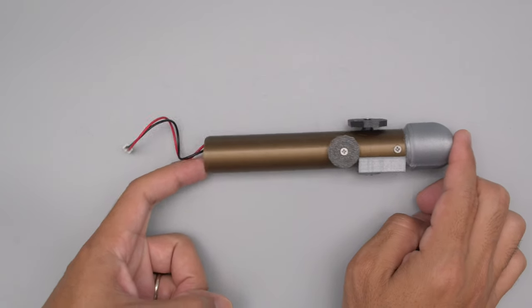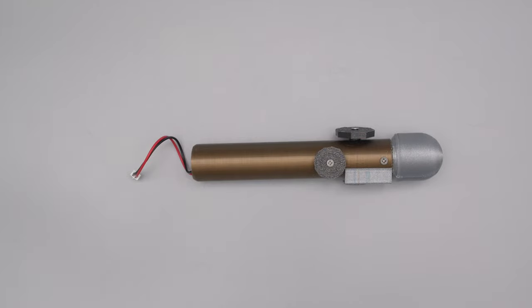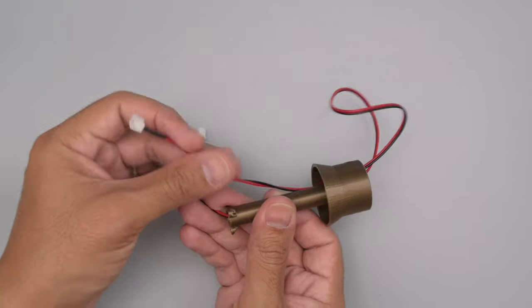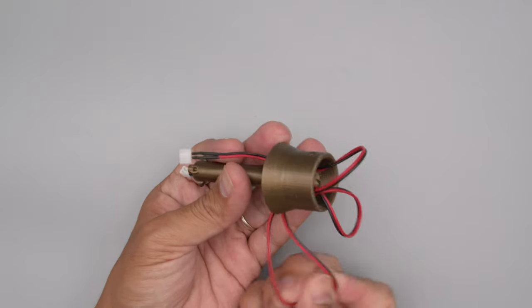This 2200 milliamp hour LiPo battery slides into the handle with the power cable facing out. We routed a JST extension cable through the stem piece with the excess wiring fitted through the holes in the bottom.